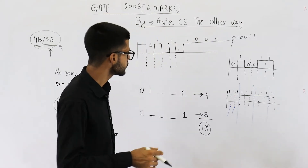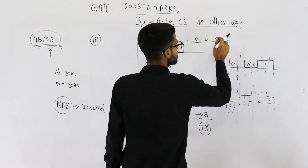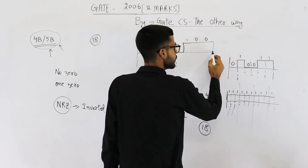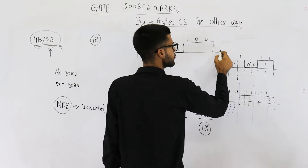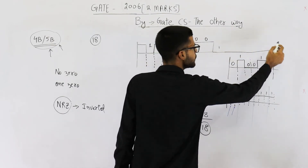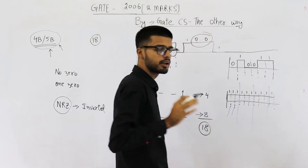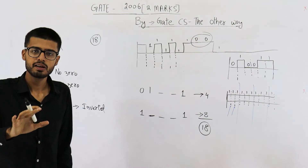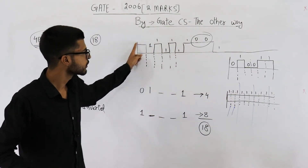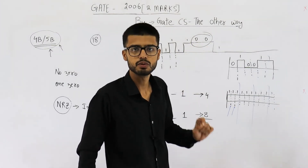The NRZi scheme says: whenever you want to send a 1, invert the signal; whenever you want to send a 0, keep it as it is. So it is not fixed that 0 is always represented by high or low voltage. If the voltage was low before, zeros keep it low. If you want to send a 1 after that, change the value.